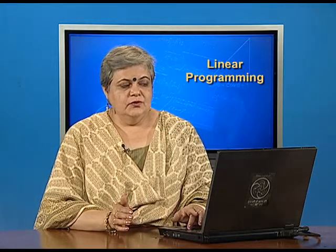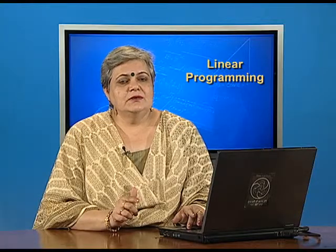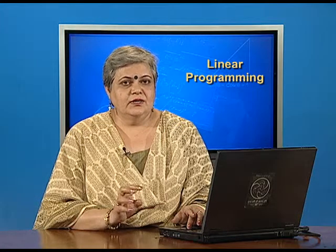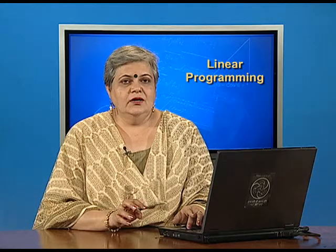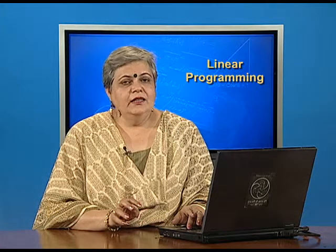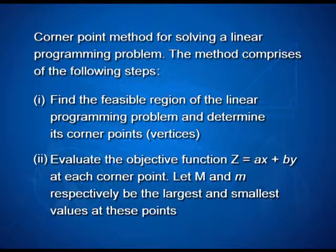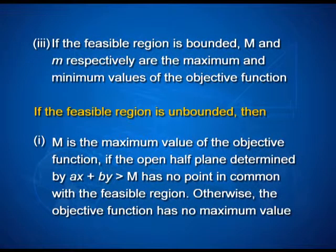What we need to do is start with finding the feasible region. The feasible region is a region which satisfies all the constraints, which are linear inequalities. So, the feasible region is the common region of the Cartesian system where all the inequalities and the non-negative restrictions are satisfied. Then we find the corner points — that is, the vertices of this feasible region. Next, we evaluate the objective function at each of these corner points.